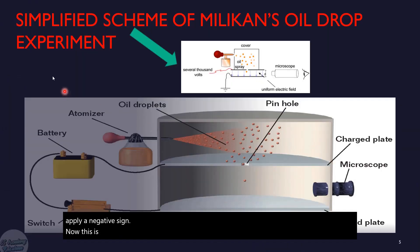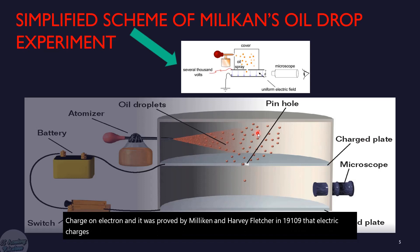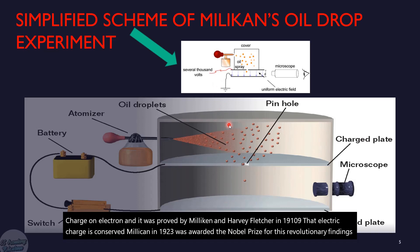This is the Millikan oil drop experimental arrangement, used to find out the charge on an electron. It was proved by Millikan and Harvey Fletcher in 1909 that electric charge is conserved. Millikan was awarded the Nobel Prize in 1923 for these revolutionary findings on conservation of electric charge.